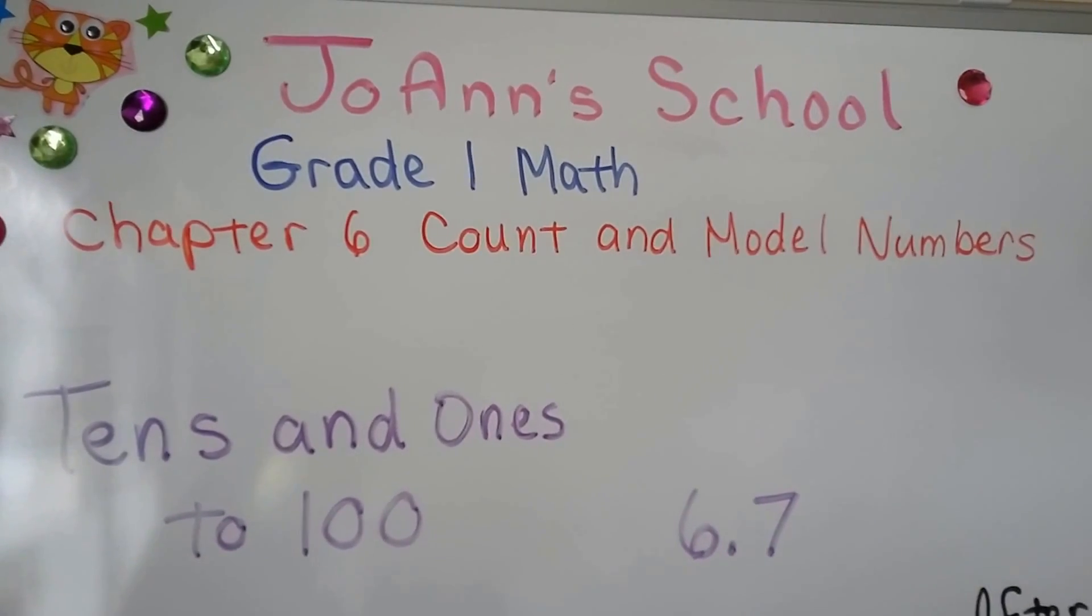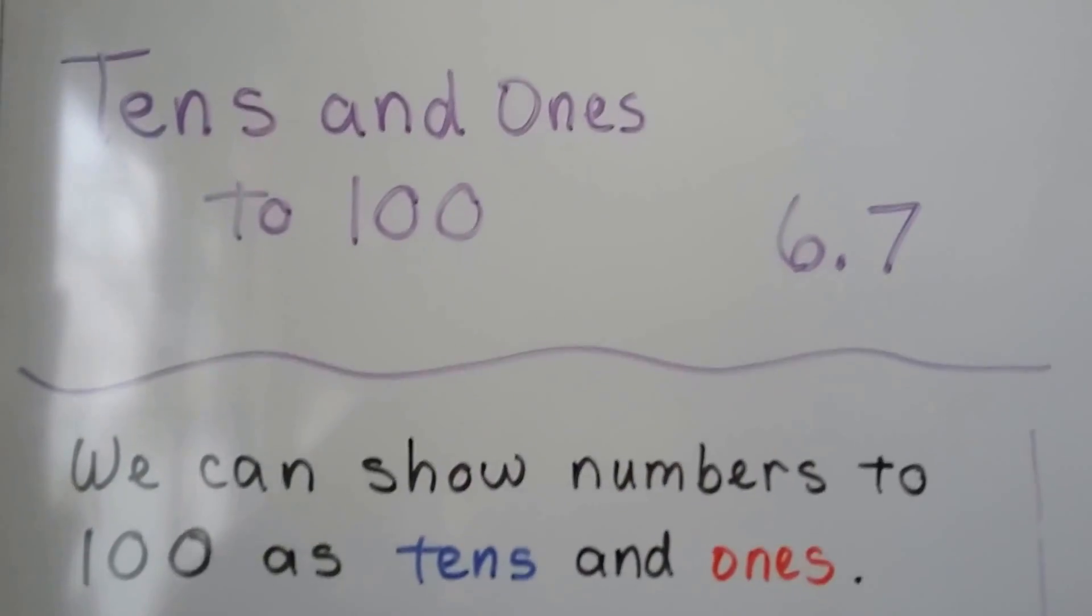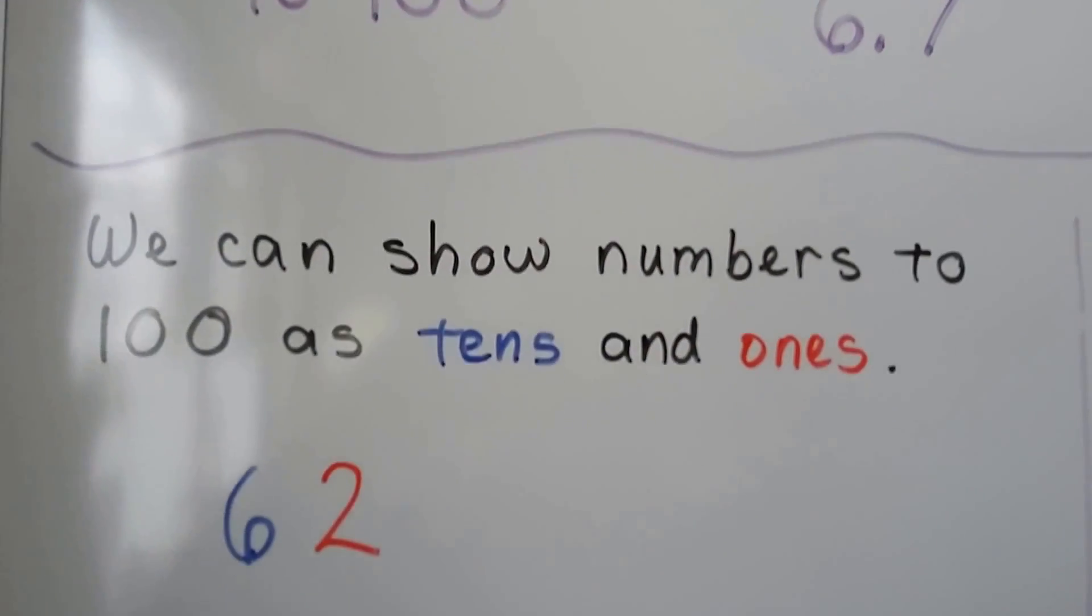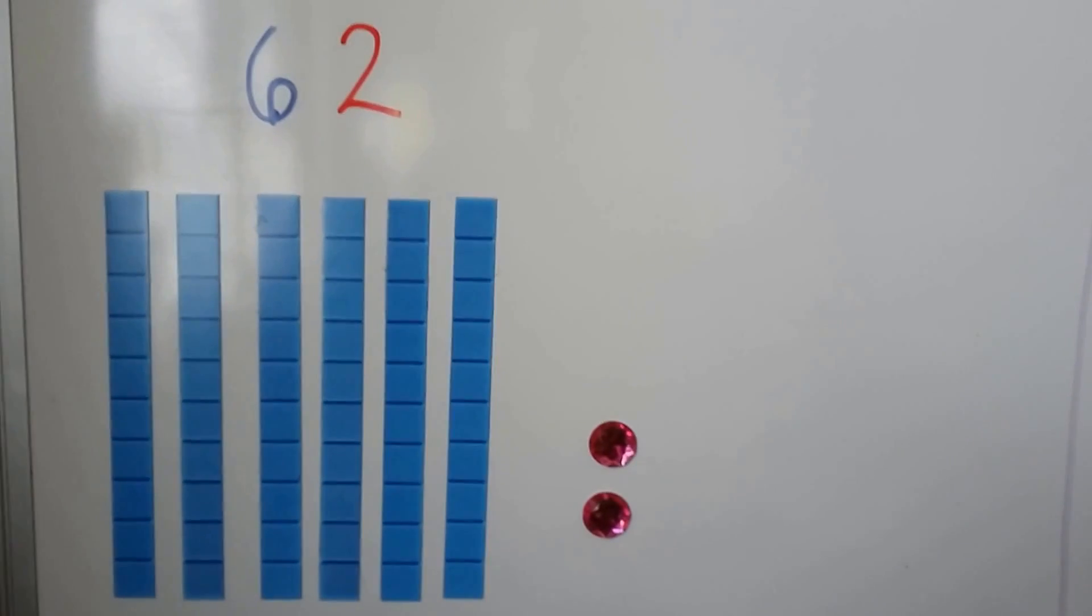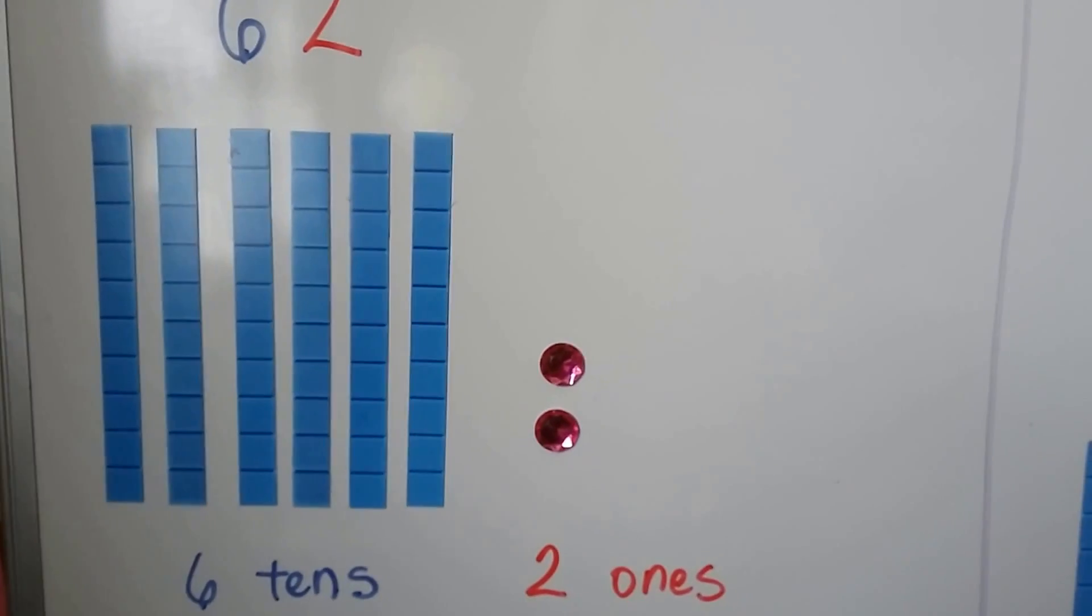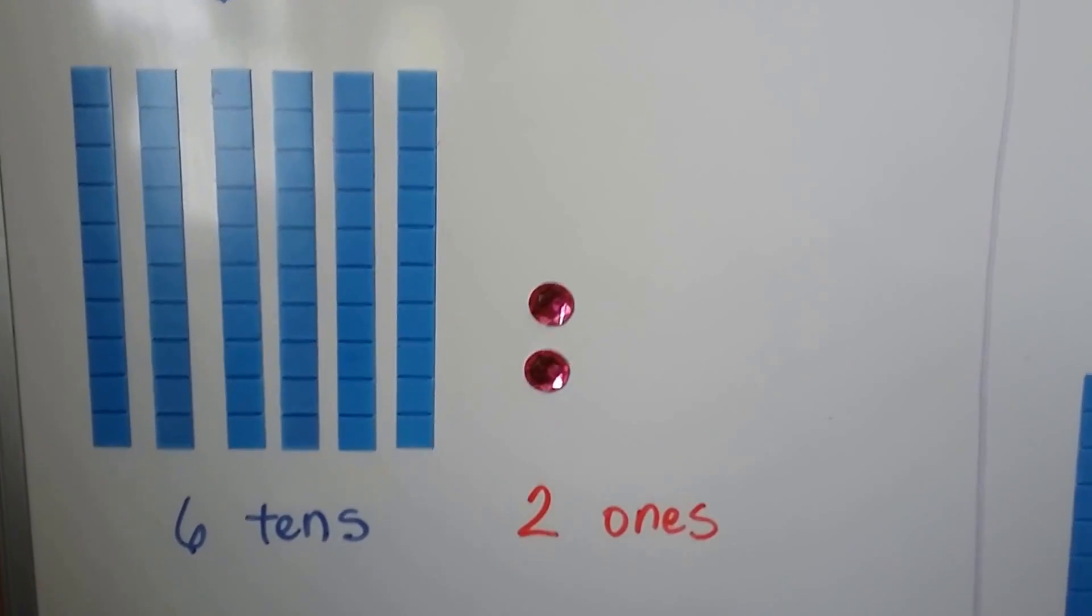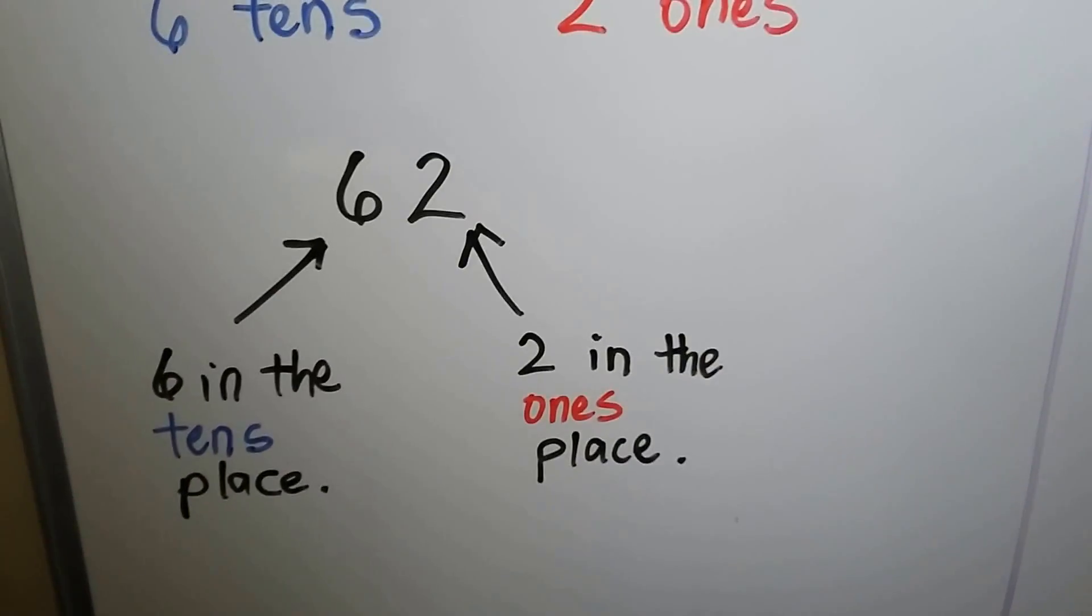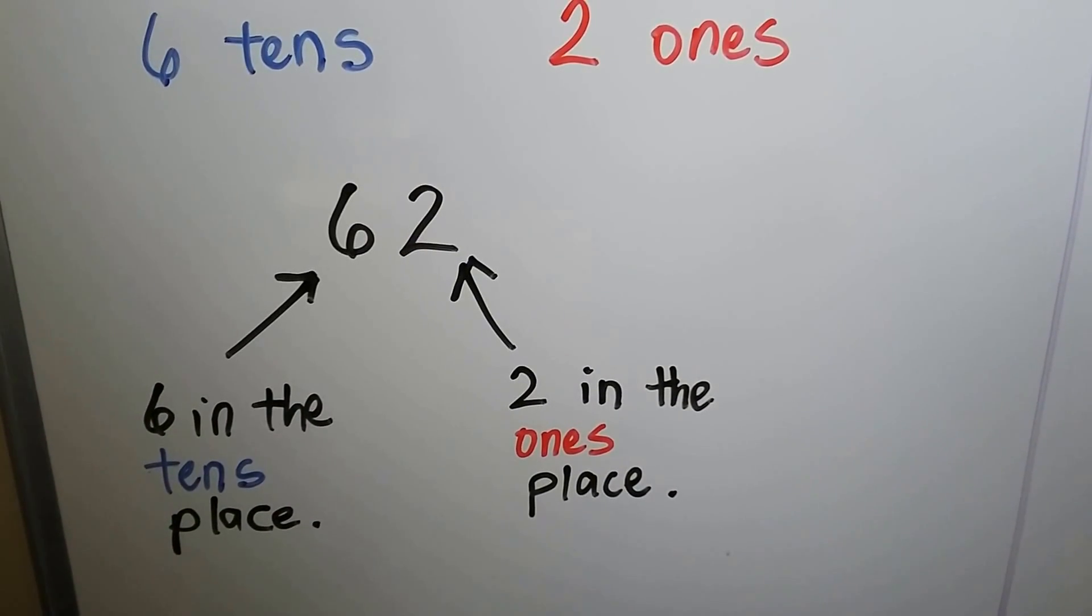Tens and ones to 100. We can show numbers to 100 as tens and ones. We have 62. We have 6 tens and 2 ones. There are 6 rods of 10 and 2 units of 1. Sixty-two has a 6 in the tens place and a 2 in the ones place.